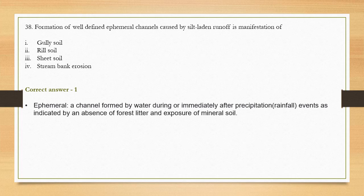An ephemeral channel is a channel formed by water during or immediately after precipitation or rainfall, indicated by an absence of forest litter and exposure of mineral soil. Because rainwater falls directly, channels are created in the soil and we do not see minerals or forest litter in them. So the correct answer is gully soil.